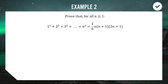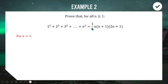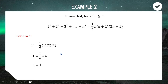Let's do a more complicated example. We've got 1² + 2² + 3² + ... + n² equals (1/6)n(n+1)(2n+1). Step 1: show it works for n=1. On the left: 1² = 1. On the right: (1/6) × 1 × 2 × 3 = (1/6) × 6 = 1. Left-hand side equals right-hand side, so the statement holds true when n=1.